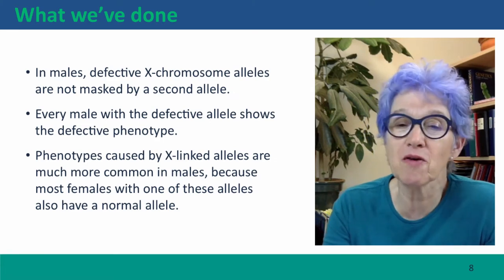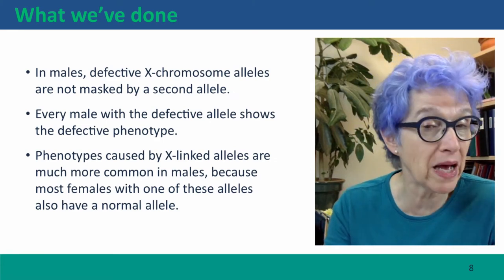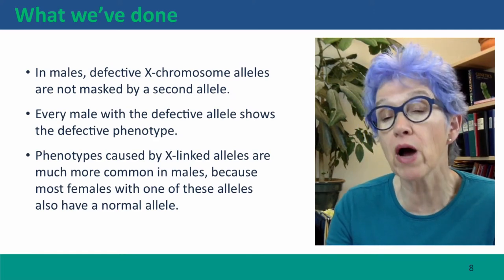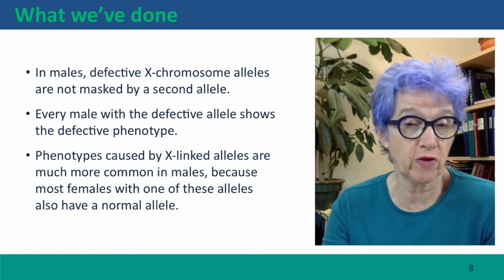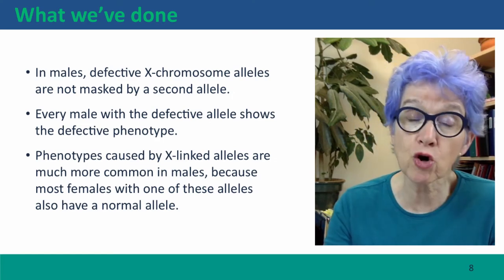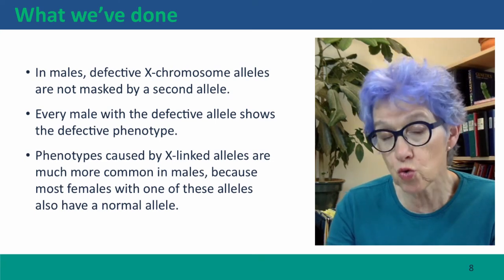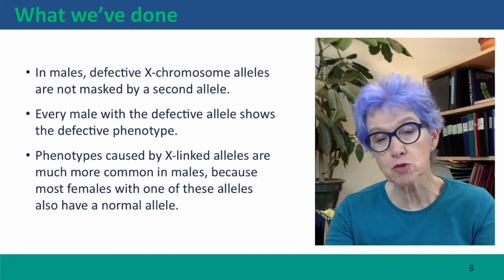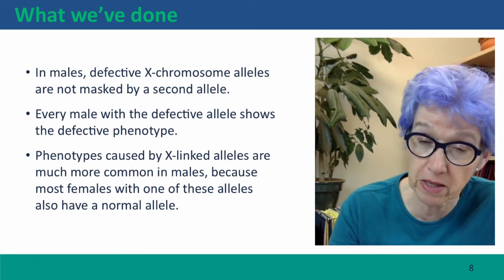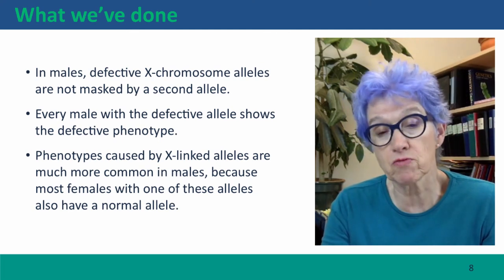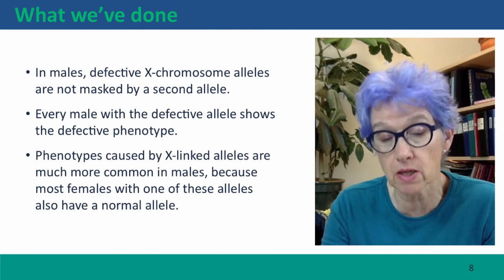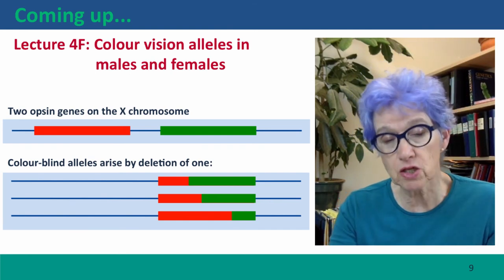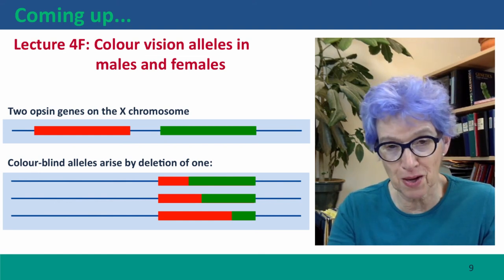So, we've talked about how in males, defective alleles of X chromosome genes aren't masked by a second normal allele as they would be in autosomal genes or X-linked genes in females. Instead, every male with a defective allele on the X chromosome shows the defective phenotype, regardless of whether the allele would be recessive to a wild-type allele or not. Phenotypes caused by recessive X-linked alleles are seen much more commonly in males than in females. Coming up next, we'll consider the mechanism that causes red-green colorblindness. I hope to see you there.